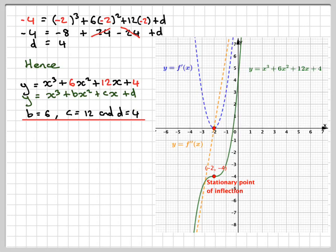If we were to draw the graph, here is the curve with its stationary point of inflection at minus 2, minus 4. If we look at the first derivative of this curve, it's a quadratic. At the point x equals minus 2, dy by dx equals 0. If we differentiate this again, we get the second derivative. And again, at the stationary point, the second derivative equals 0.